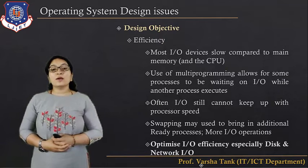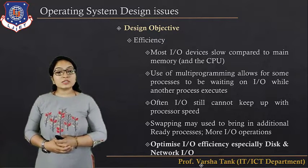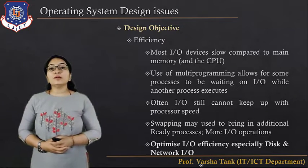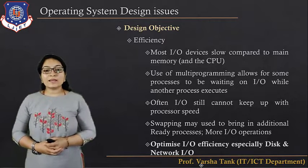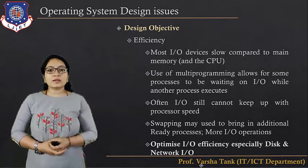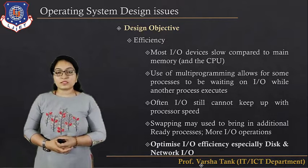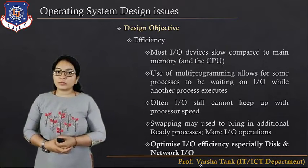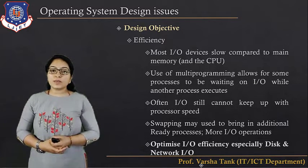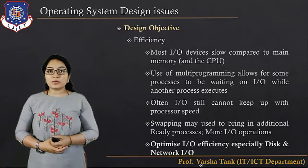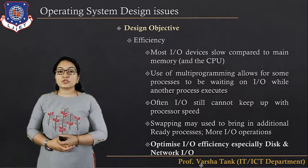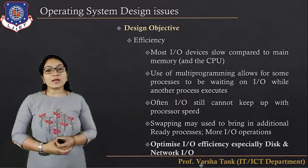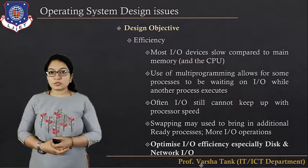The first is efficiency. Most IO devices are slow compared to the main memory. IO devices are generally slower than main memory because main memory is fast memory. Use of multiprogramming allows some processes to be waiting on IO while another process executes.